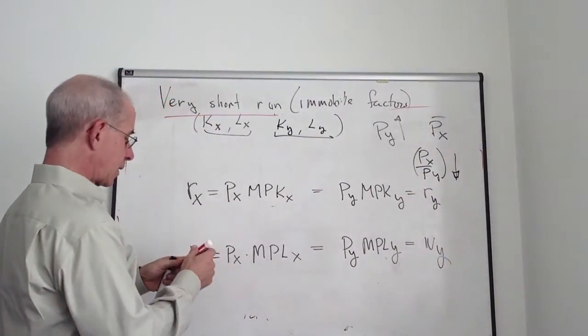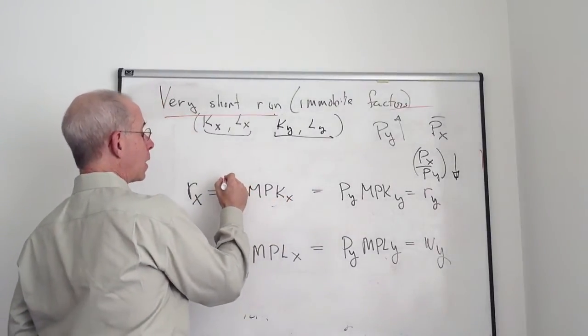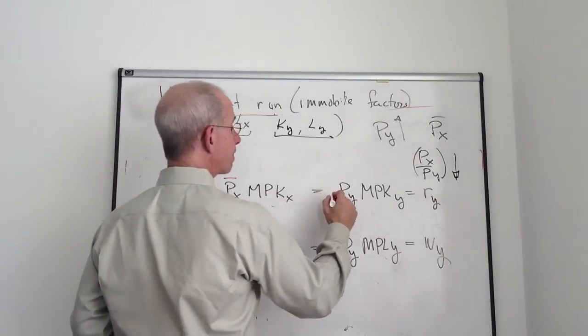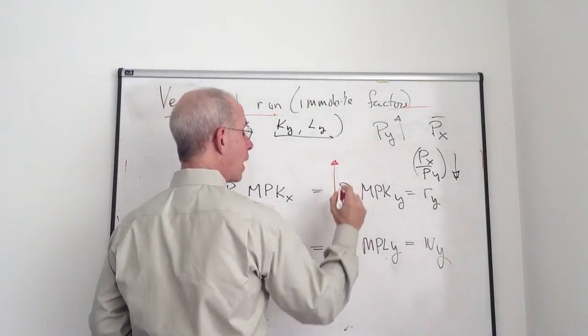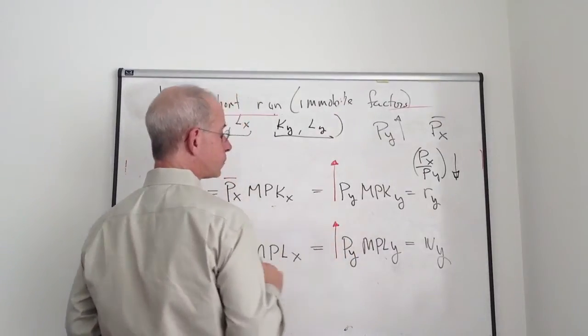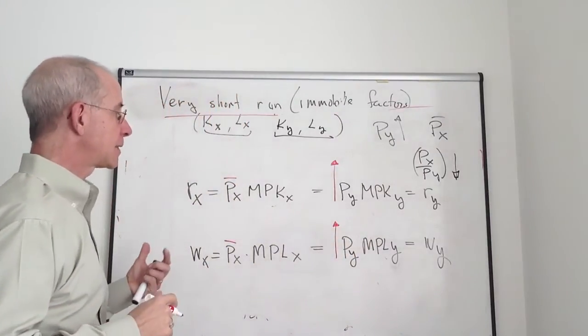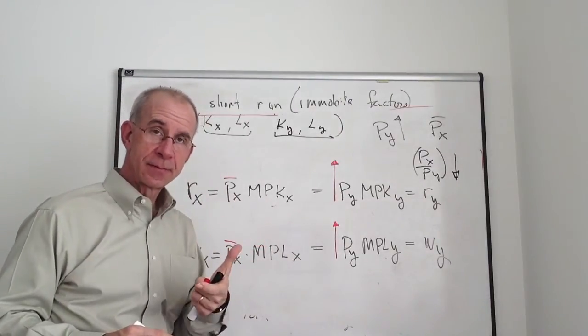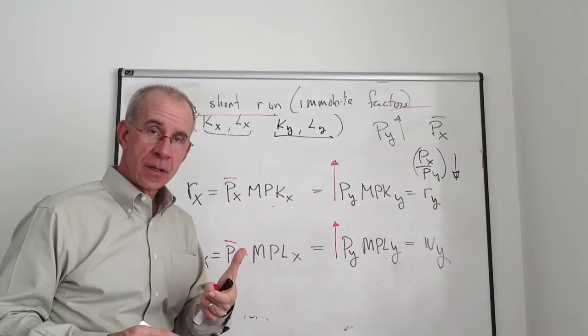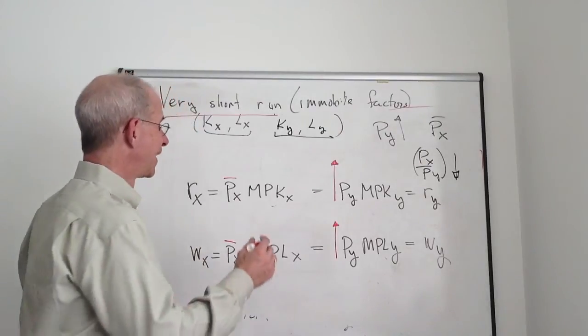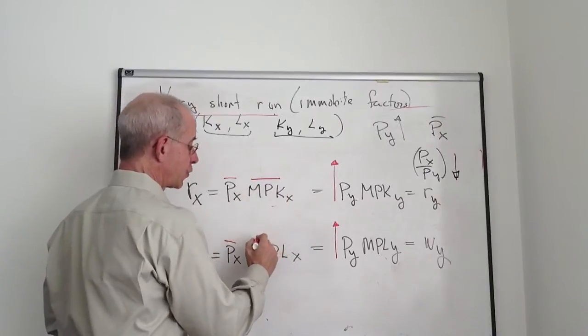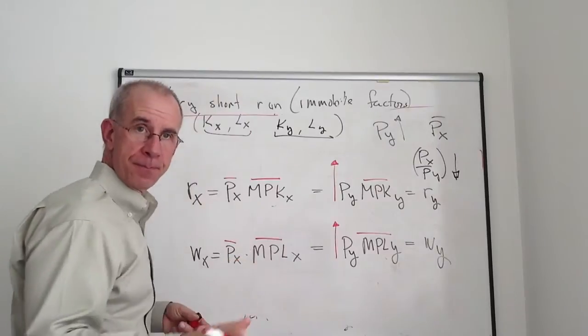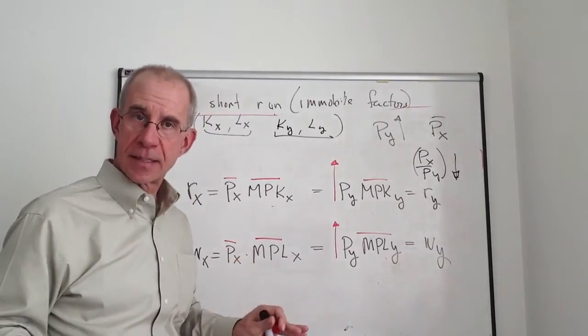Let's depict that. Price of X is staying the same and price of Y goes up. Now let's think about the marginal productivities. Because labor and capital cannot move between sectors, and you have a given technology, then the marginal productivities of labor and capital in both sectors stays the same.